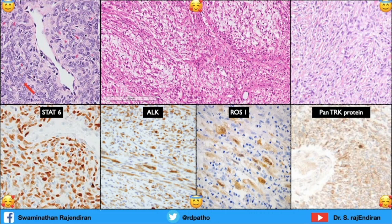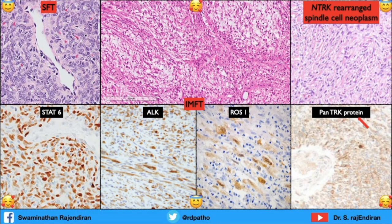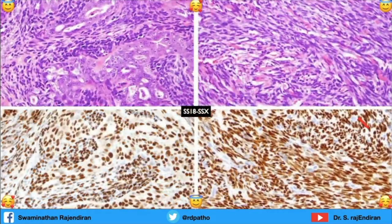This composite picture shows a hemangiopericytoma-like pattern with cells positive for STAT6 — this is solitary fibrous tumor. Here you can see a lot of inflammatory cells and edematous areas, with cells positive for ALK and ROS1 — inflammatory myofibroblastic tumor. Here is a spindle cell lesion with pankeratin positivity — an NTRK-rearranged spindle cell neoplasm.